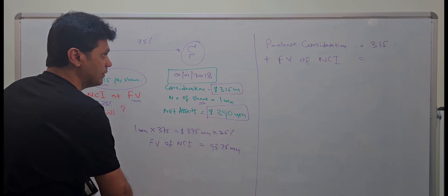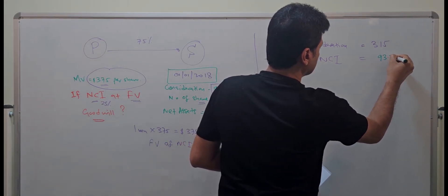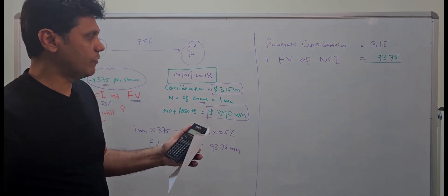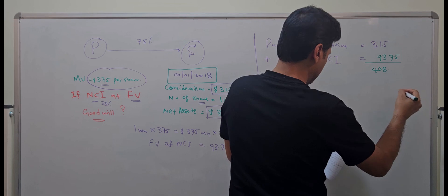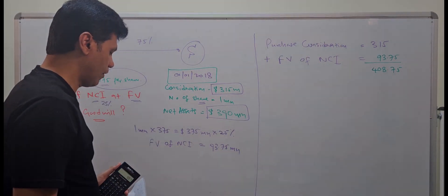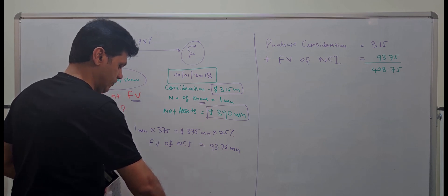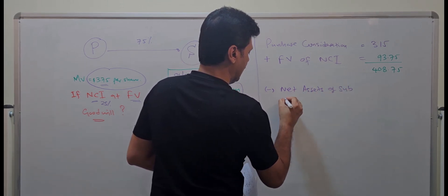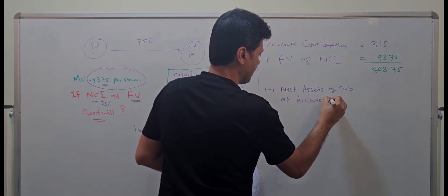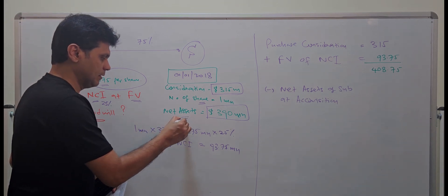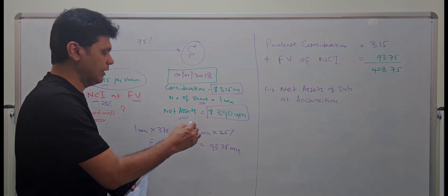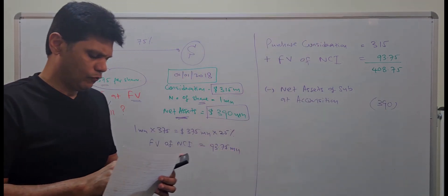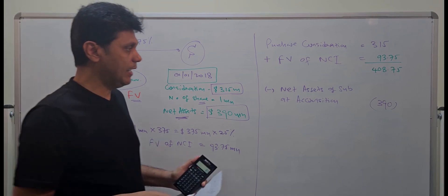So you add back the fair value of NCI which is 93.75 million. Adding 350 plus 93.75 gives 443.75 million. From this total you subtract the net assets of the subsidiary at acquisition — no fair value adjustment is given, so you take 390 million straight away. Therefore 443.75 minus 390 gives goodwill of 18.75 million.